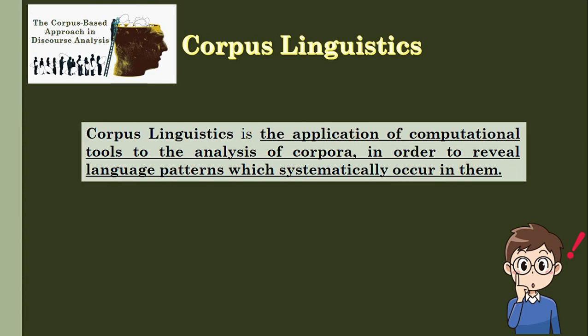Because the use of corpus is aligned with language research, let us take a look at the term corpus linguistics. Corpus linguistics is the application of computational tools to the analysis of corpora in order to reveal language patterns which systematically occur in them. Hence, the main objective of corpus linguistics is to reveal language patterns — not just based on empiricism or observation, but through the use of computational tools which are readily available online. Corpus linguistics is a foundation of language research.